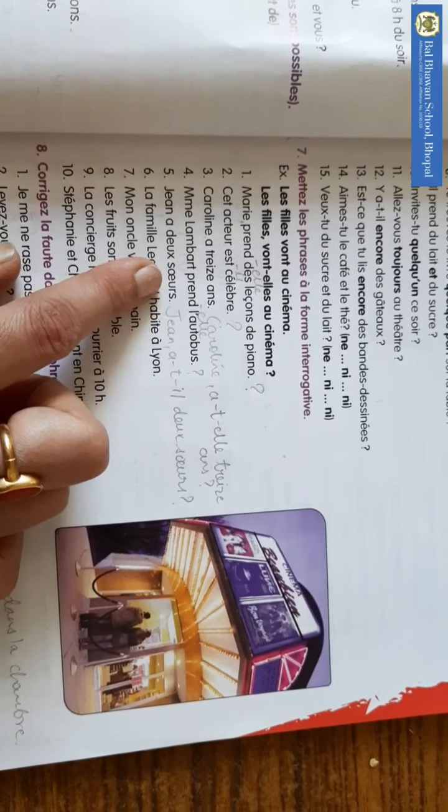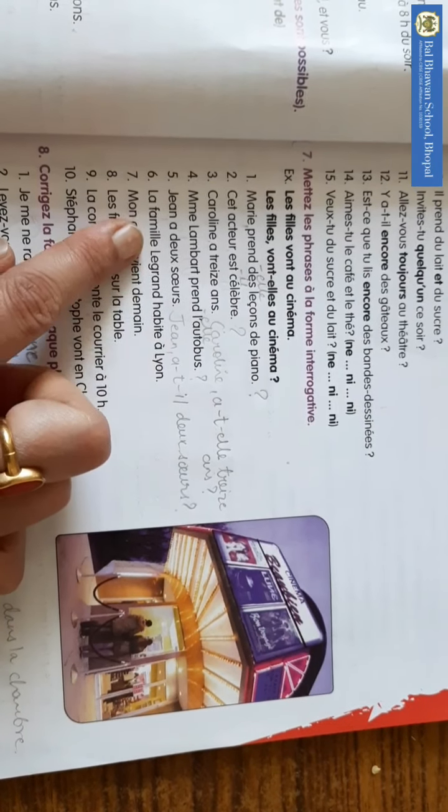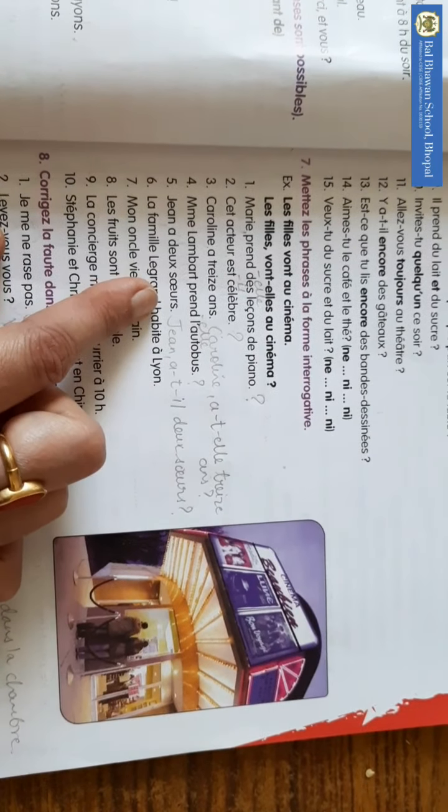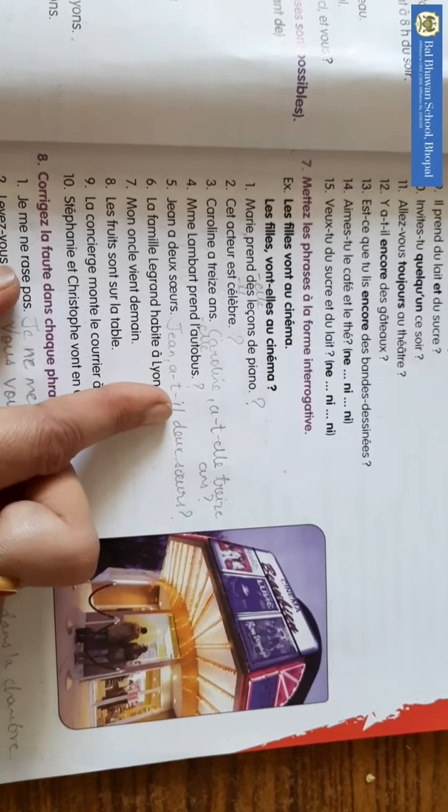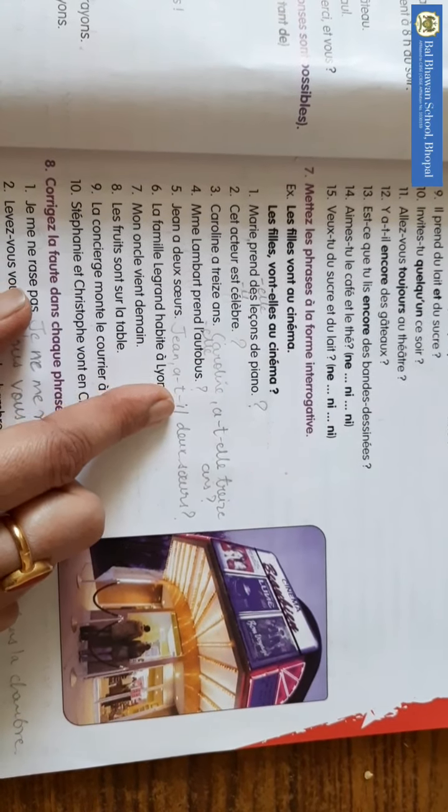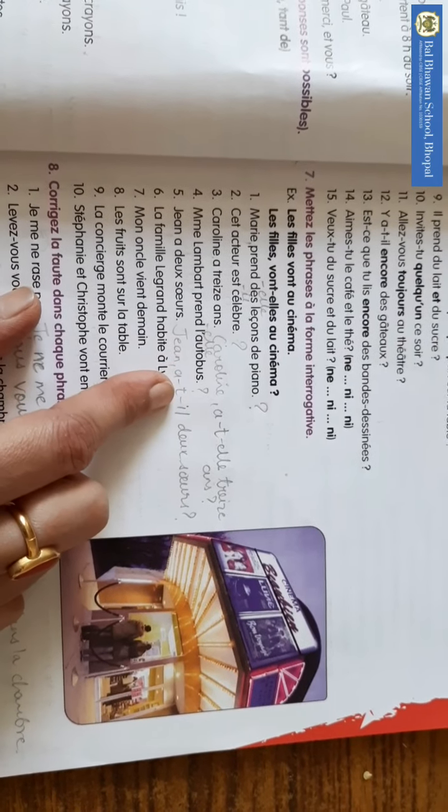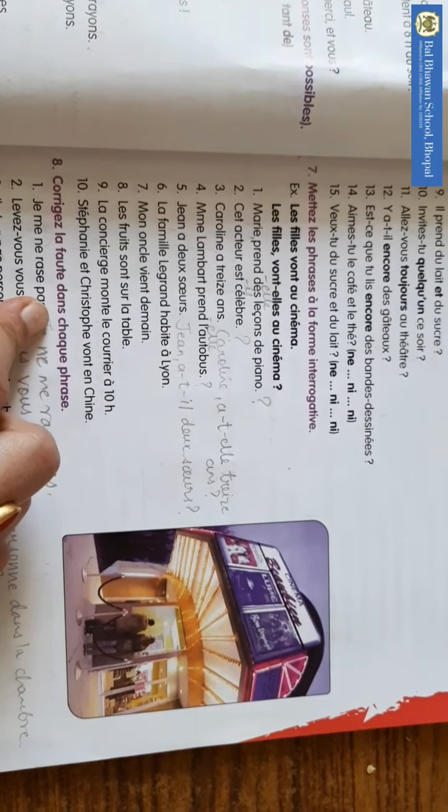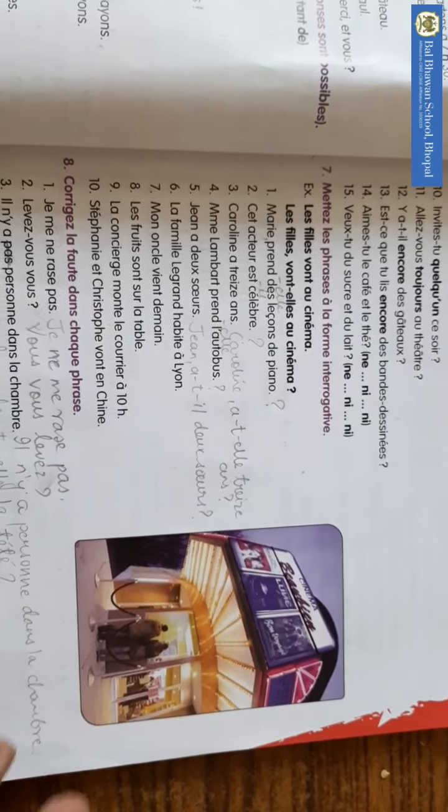Jeanne, a, de, sir. Jeanne have two sisters. So question will be, Jeanne, a, tel, de, sir. Because A and I both are vowels, we are putting T in between. So the rest of the questions, you will do by yourself.